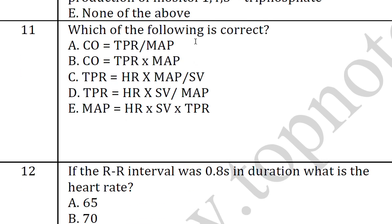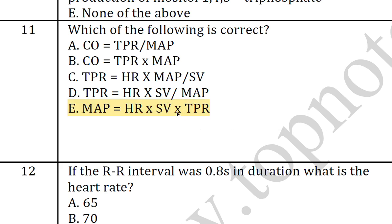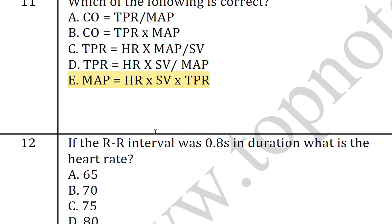The eleventh question: which of the following is correct? The answer is E: MAP is equal to HR × SV × TPR — that is, mean arterial pressure equals heart rate times stroke volume times total peripheral resistance.